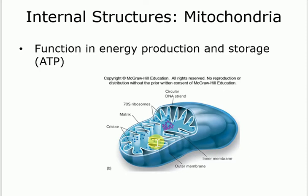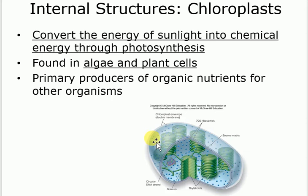Mitochondria: simply make and store ATP — energy. Chloroplast is something unique to some eukaryotes — we don't have it in humans or animals. It's basically in plants and some eukaryotes that act like plants. Those ones don't need to be parasites — they can take light and convert it into chemical energy.